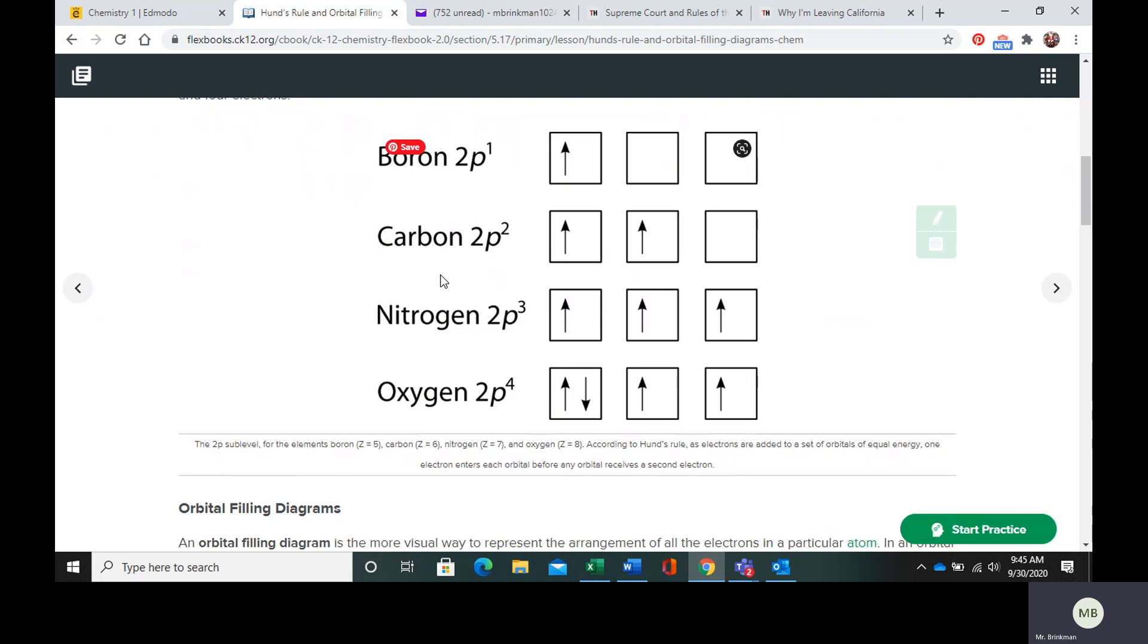This is the outermost orbital that is filled by the electrons, and we're just going across the periodic table from left to right.